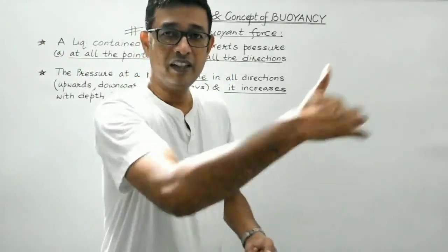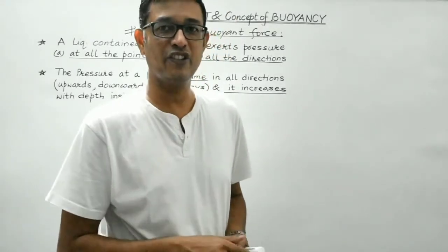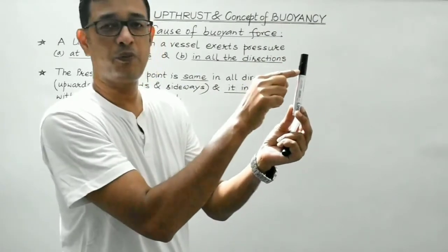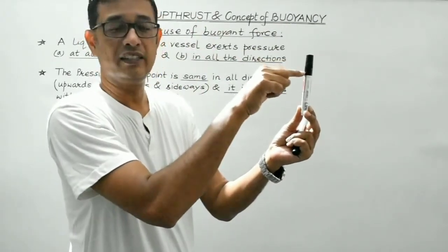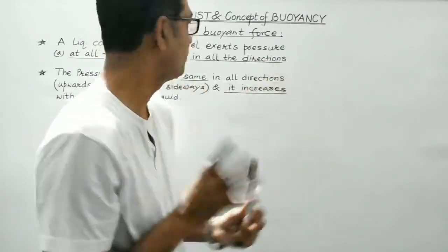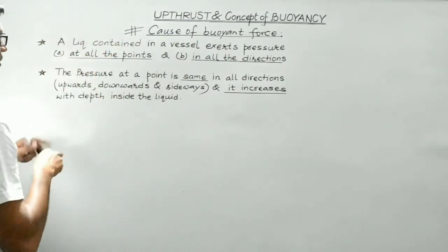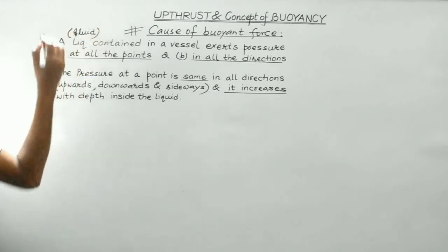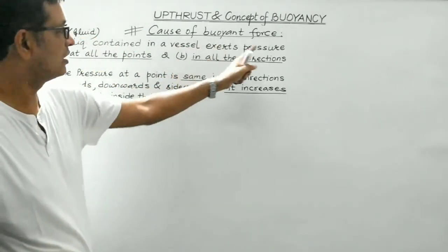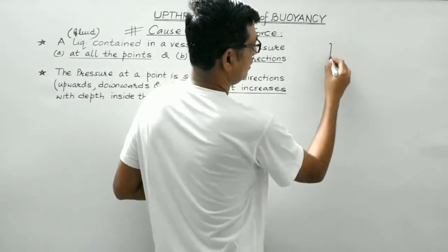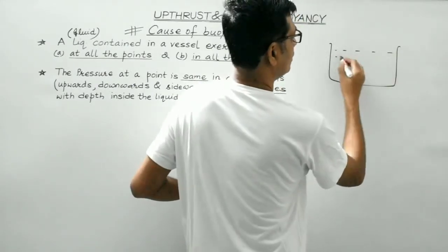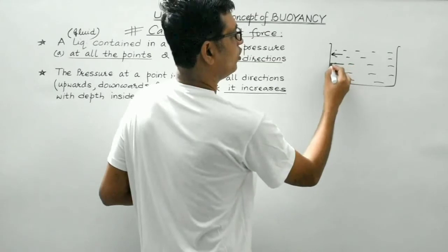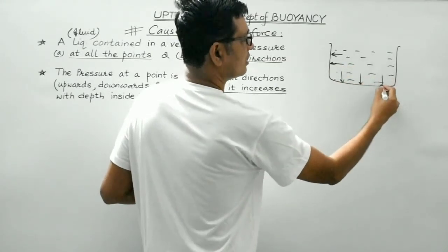Air exerts pressure at every point on the body and in all directions. In case of a fluid contained in a vessel, it will exert pressure at all points. This we have already discussed in the previous lecture. Pressure is thrust per unit area; thrust is the force exerted by the liquid on the surface normally. So a fluid definitely exerts pressure at all points and in all directions.